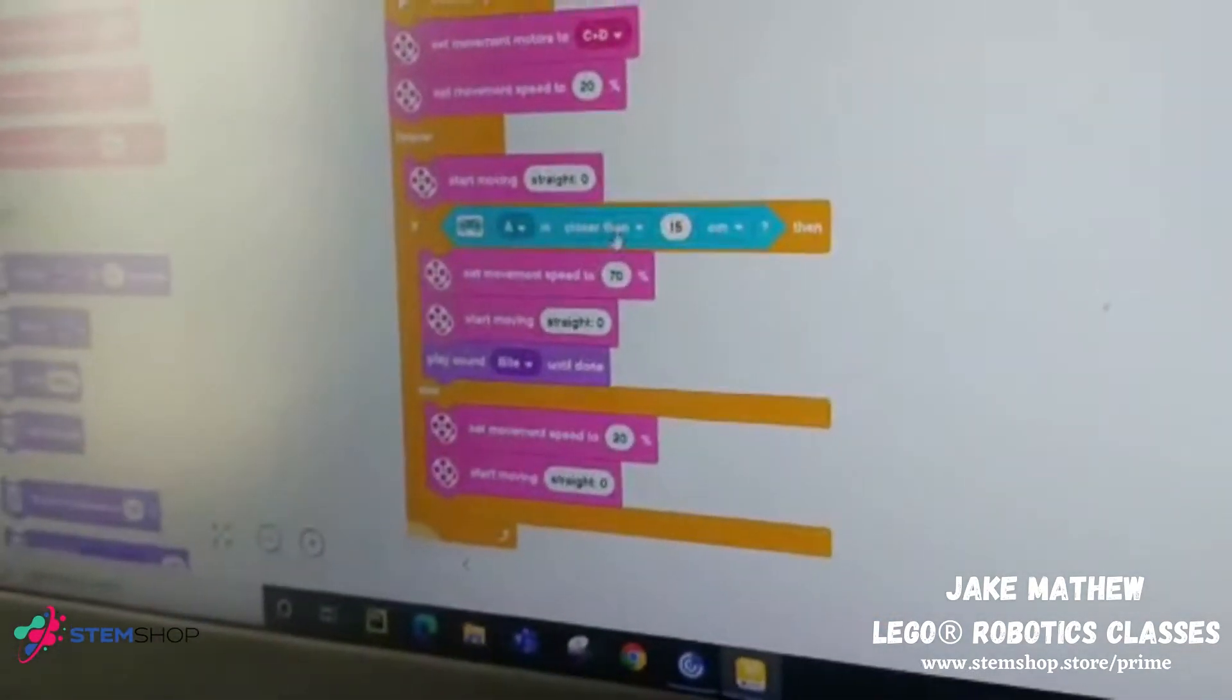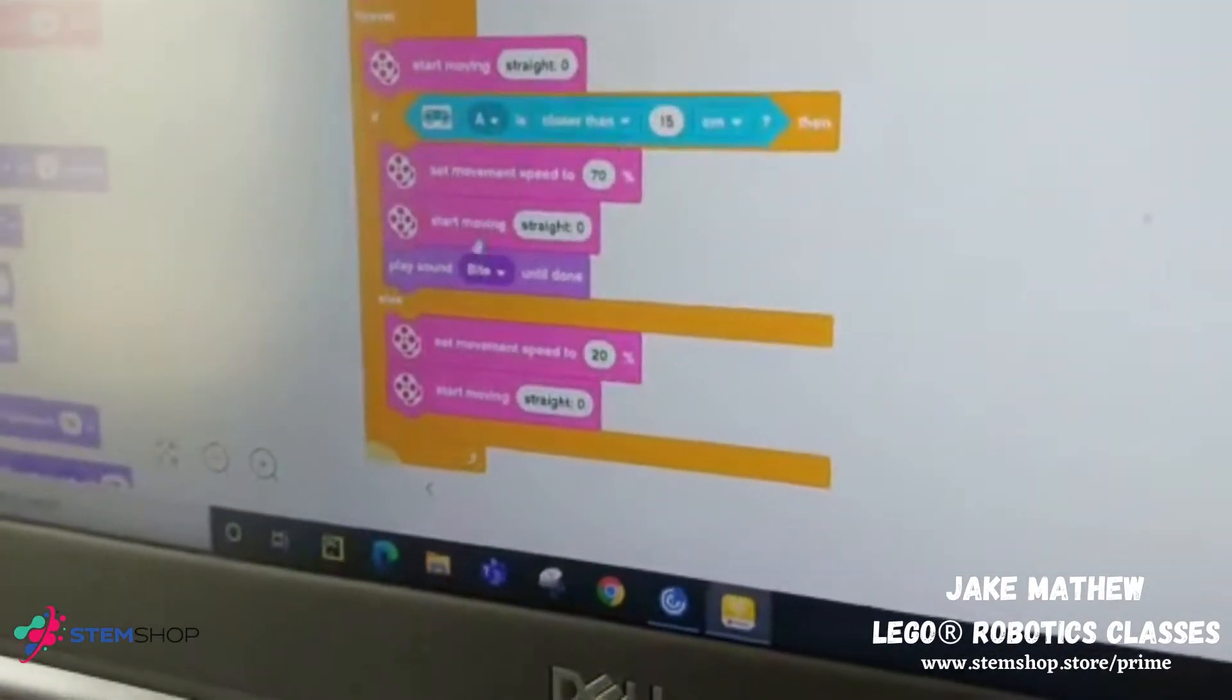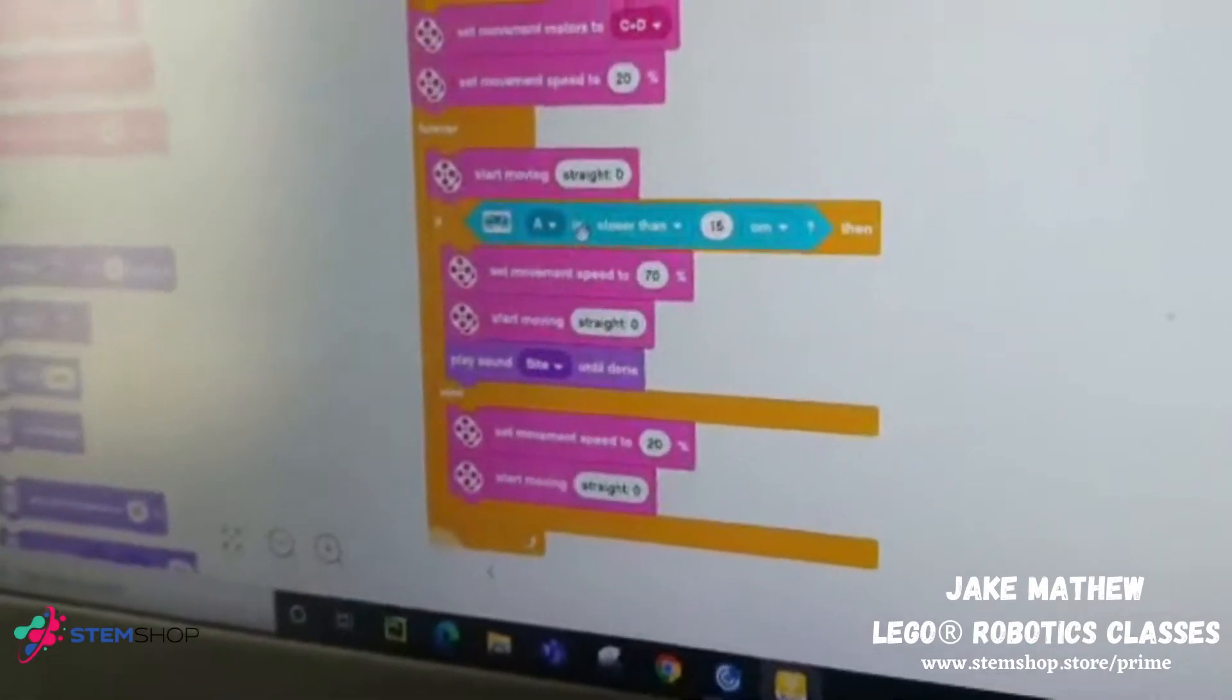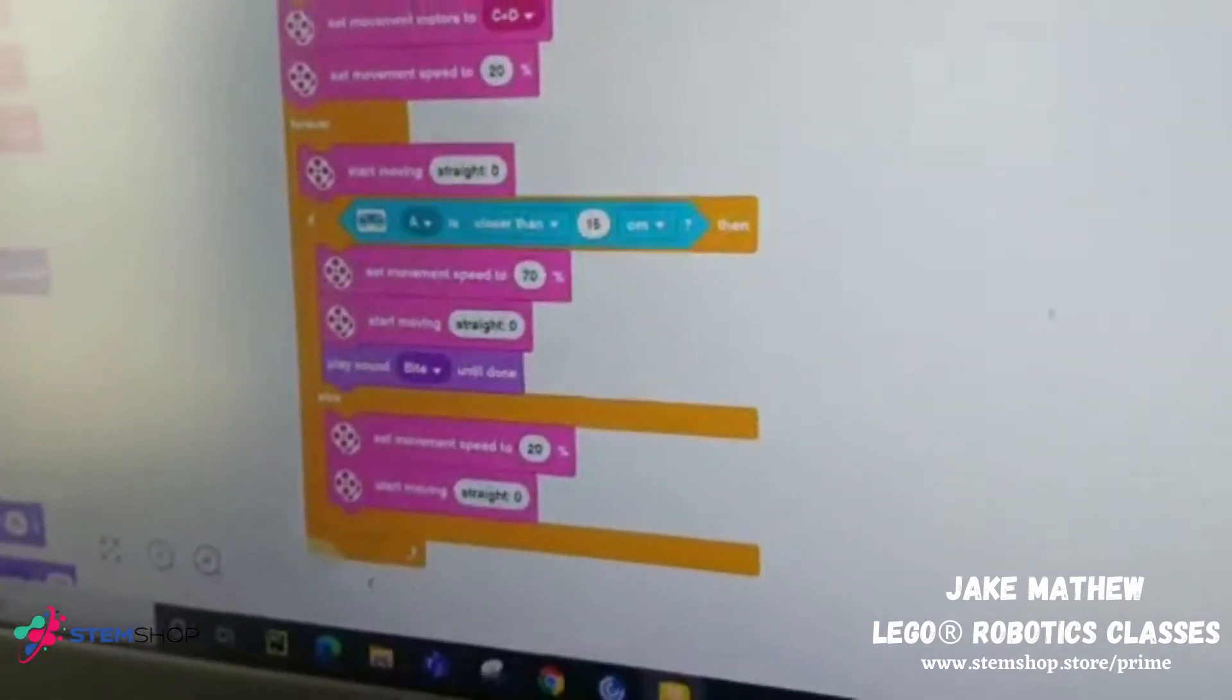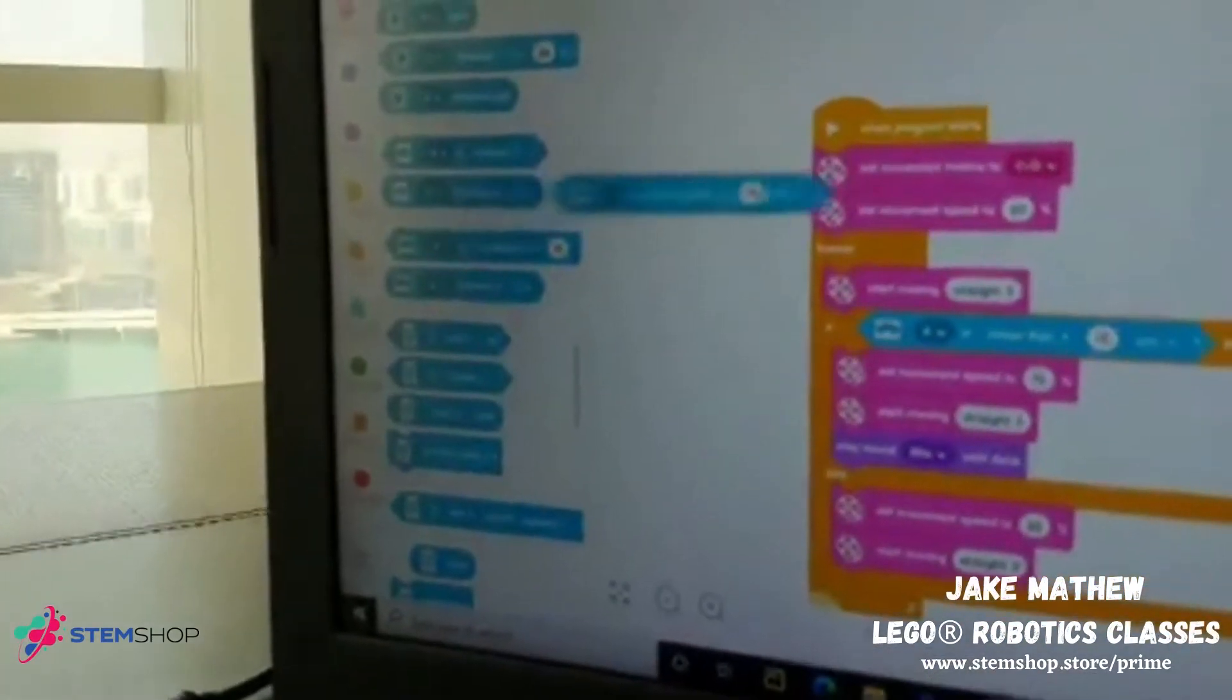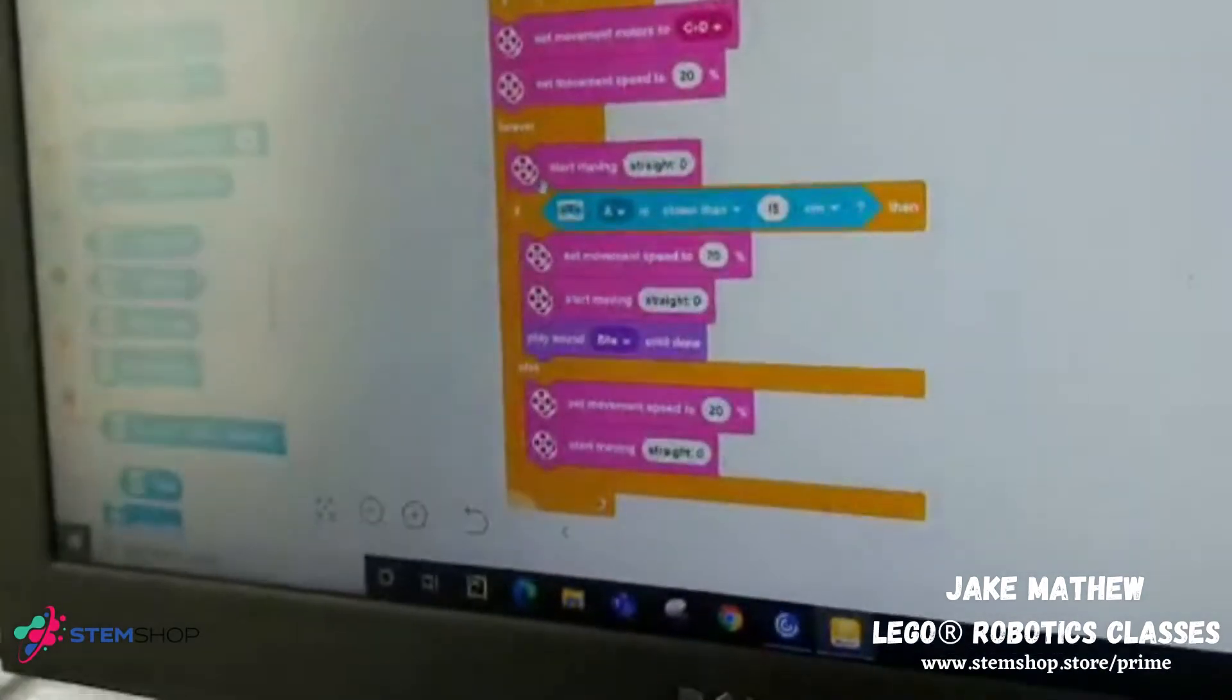Then, next one is, if A is closer than 50 centimeters, then, that means it's for the sensor. So, we need to put that in the sensors here. So, it's right here. The same one is here.